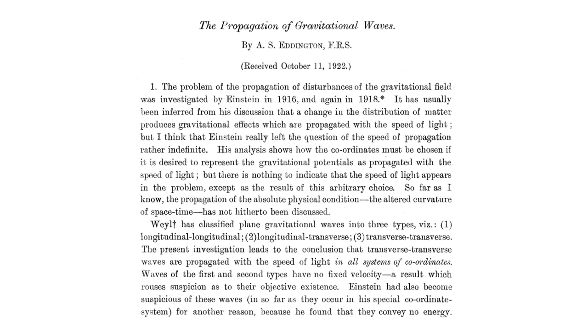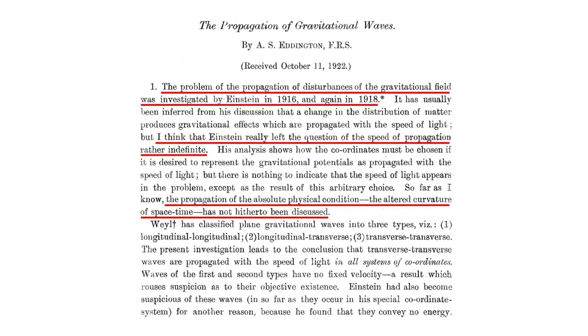A bit of the flavor of this controversy can be gleaned from Eddington's 1922 paper. He wrote, the problem of the propagation of disturbances of the gravitational field was investigated by Einstein in 1916 and again in 1918. I think that Einstein really left the question of the speed of propagation rather indefinite. The propagation of the absolute physical condition, the altered curvature of space-time, has not hitherto been discussed.